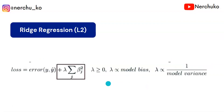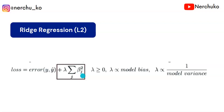The Ridge Regression loss function is: Loss = Error(y, ŷ) + λ × Σβⱼ². Here ŷ is the predicted value and y is the actual value. The key difference: L1 creates sparsity in weights — making unimportant feature weights exactly zero. L2 assigns small values to weights rather than zeroing them out.